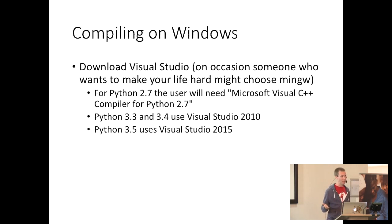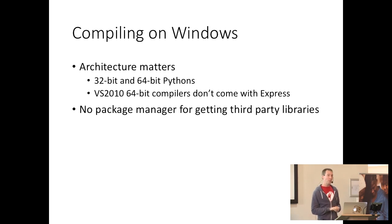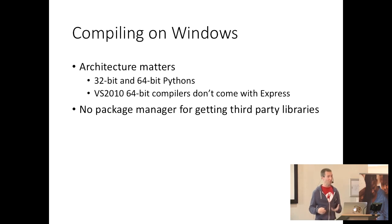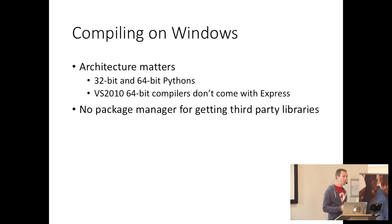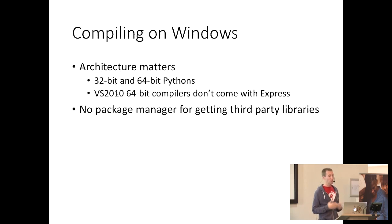Unfortunately, everyone in this room undoubtedly cares about more than just Python 3.5 and above, so for now we need to care about all of this. There are also 32-bit and 64-bit versions of Python on Windows requiring compilers in the corresponding architecture. Visual Studio 2010, which Microsoft still sells, does not give you the 64-bit compilers for free — they are available in the Windows SDK, version 7.1. There's also no package manager for getting third-party libraries on Windows, so your users will need to obtain those libraries on their own.